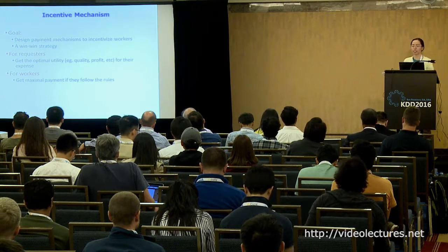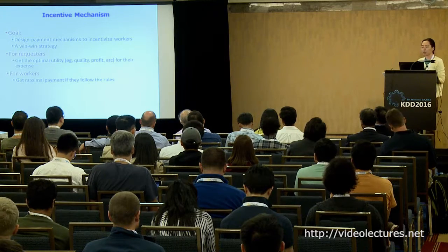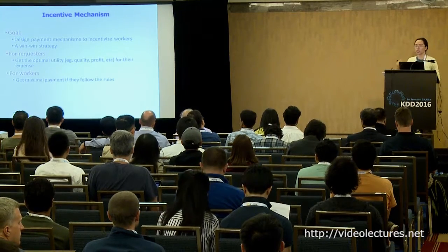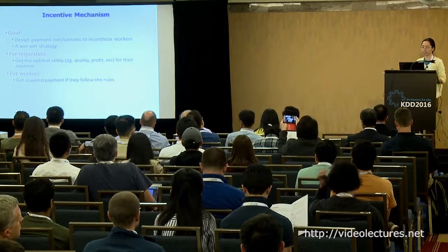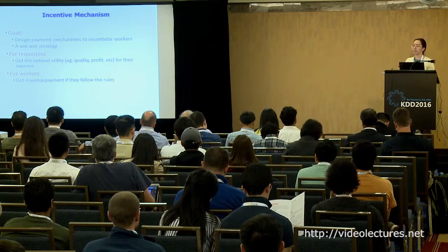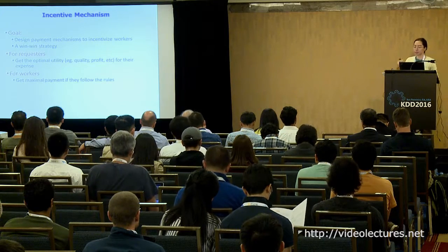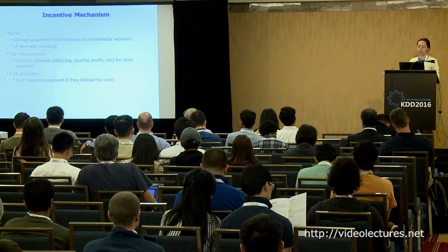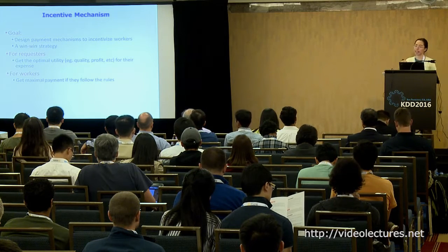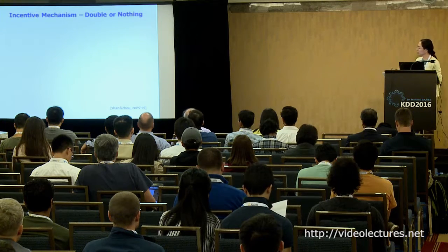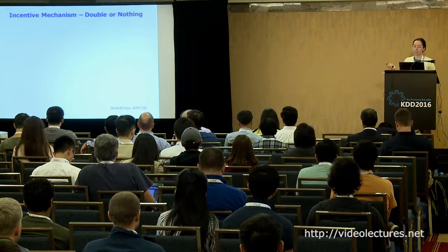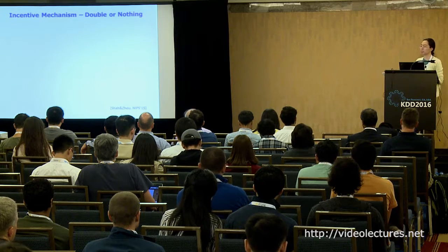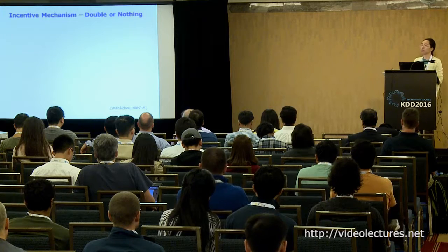The second part is the incentive mechanism. The goal is to design a payment mechanism to incentivize workers to work for your project — ideally a win-win strategy benefiting both requesters and workers. For requesters, you want optimum utility for your expense. For workers, you want maximum payment if you follow the mechanism's rules. The first mechanism I want to discuss was published at NIPS — a double-or-nothing strategy.